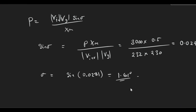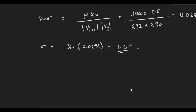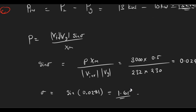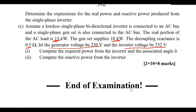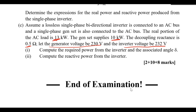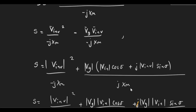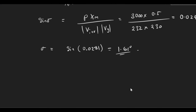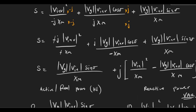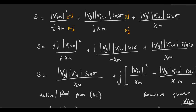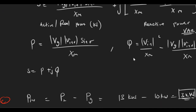That phase difference of 1.61 degrees is between the voltage of the generator and the voltage of the inverter. Now part (c)(ii): compute the reactive power from the inverter. We use the equation for Q.